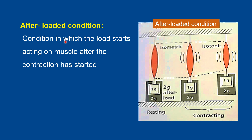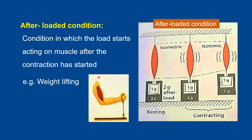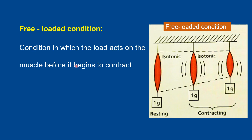Let's get started with the effect of load on muscle contraction. We should know what are the after-loaded and free-loaded conditions. In after-loaded condition, the load acts on muscle after it has started contracting. The muscle is resting on some platform; the load is resting on the platform, and when the muscle contracts, the load acts on the muscle. For example, in weight lifting, the weight is rested on a platform and when we start contracting the elbow, the load acts on the elbow — this is after-loaded condition.